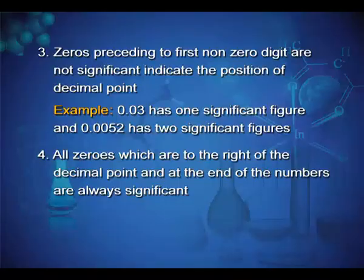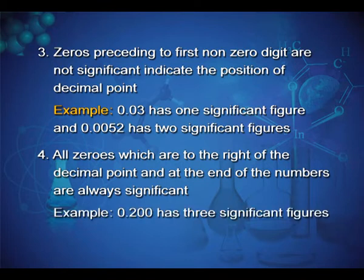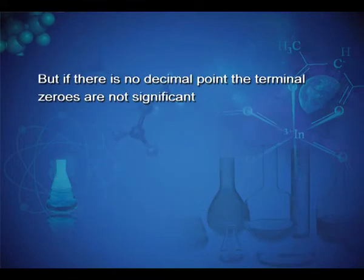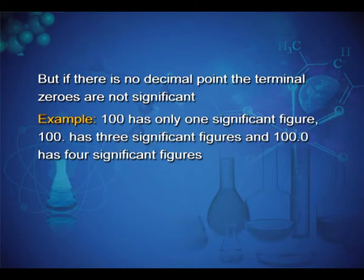The fourth rule: all zeros which are to the right of the decimal point and at the end of the number are always significant. Example: 0.200 has 3 significant figures. But if there is no decimal point, the terminal zeros are not significant. Example: 100 has only 1 significant figure, 100. has 3, and 100.0 has 4.